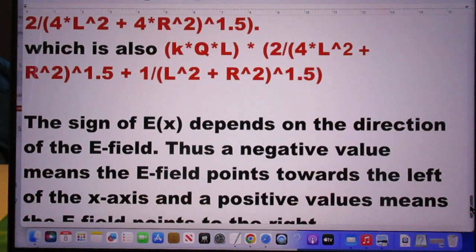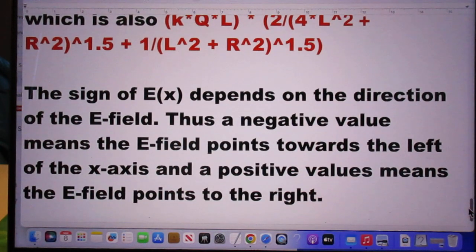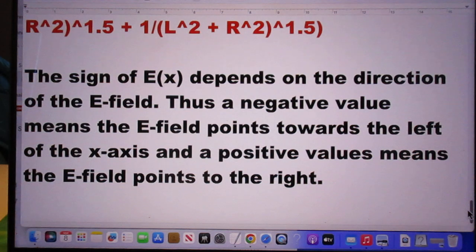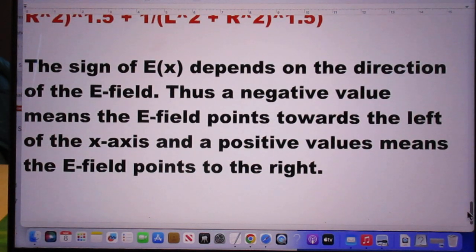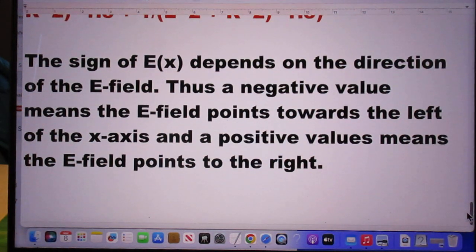The sign of E(x) depends on the direction of the E-field. Thus, a negative value means the E-field points towards the left of the axis, and a positive value means the E-field points towards the right.